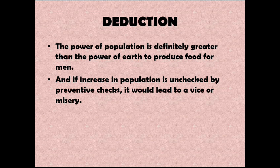Next we have the deductions of the theory. The first deduction is that the power of population is definitely greater than the power of the earth to produce food for man. If the increase in population is unchecked by preventive checks, which we will discuss later, it would lead to vice or misery.